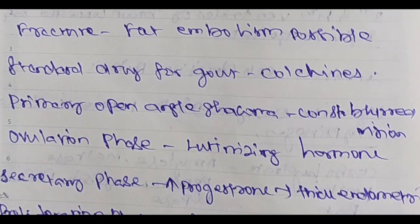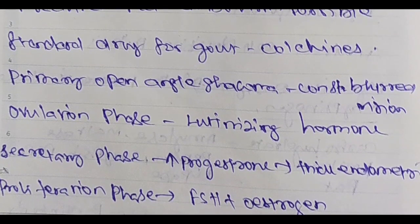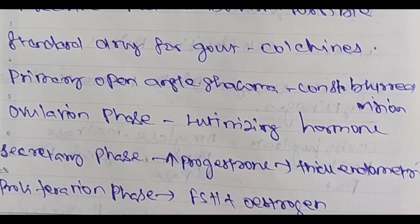Then standard drug for gout — that's colchicine. Colchicine is the standard drug for gout disease. This is one of the acute and chronic conditions.